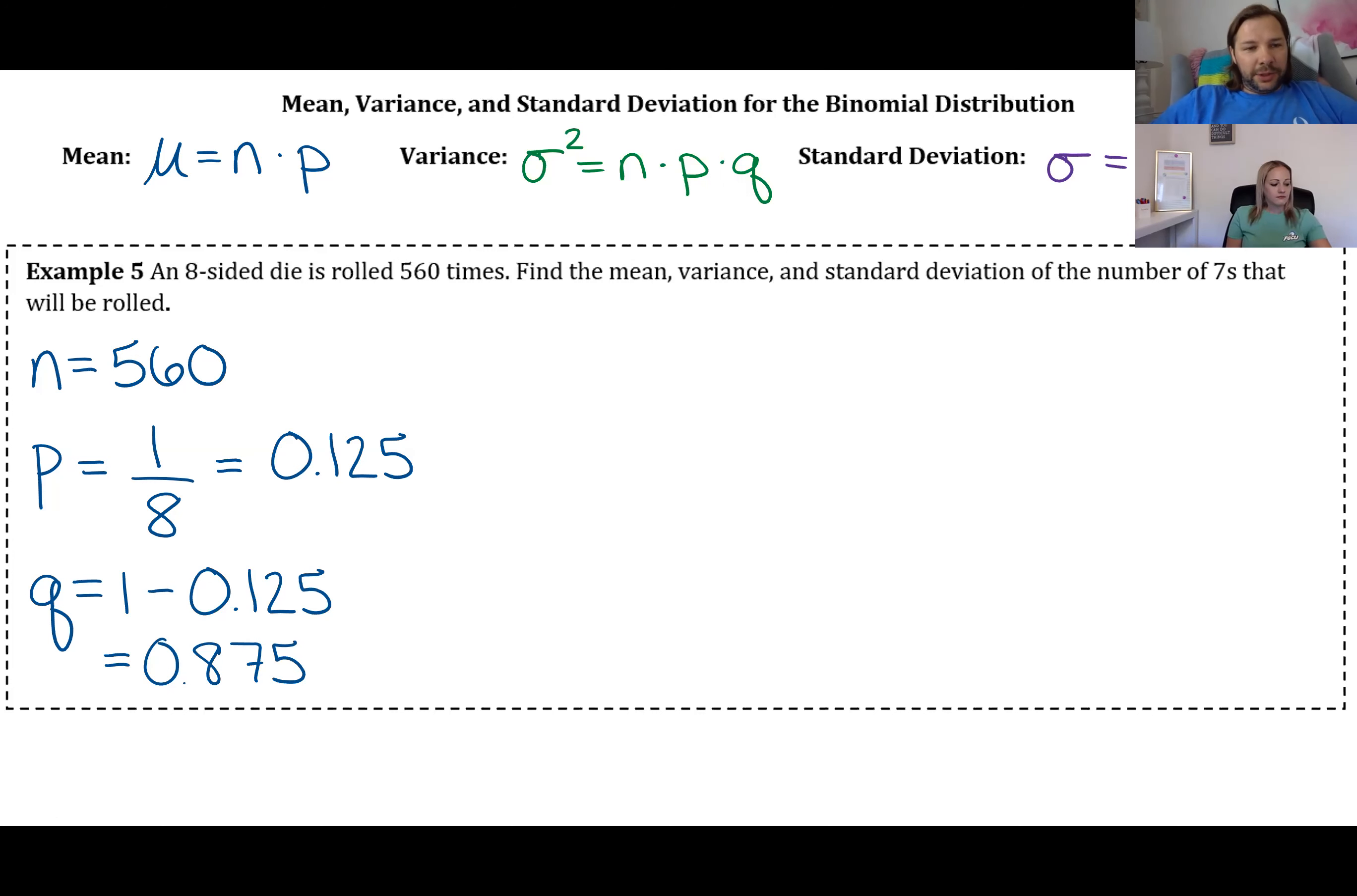And so to calculate the mean, all we're going to do is take 560 times that 0.125, or one-eighth. And so you get about 70, so the mean is 70.